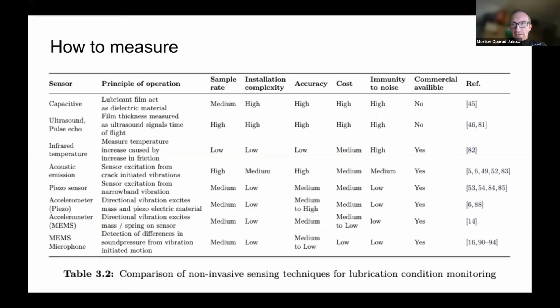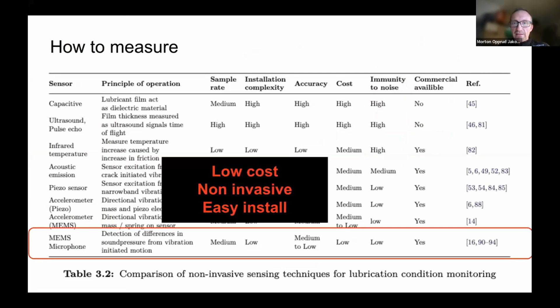So how do we measure this? There are different techniques that each have different pros and cons, and they are summarized in this table. For example, what I've been working with in my PhD is using MEMS microphones. The main motivation for doing that is actually that they are very low cost. They are non-invasive and they are easy to install, which makes them a good candidate for building low-cost IoT sensors that can be deployed on numerous lower cost industrial machines and things that have bearings that might affect insufficient lubrication conditions.